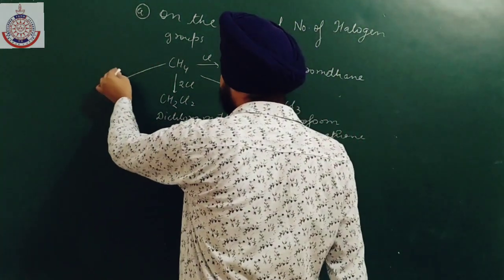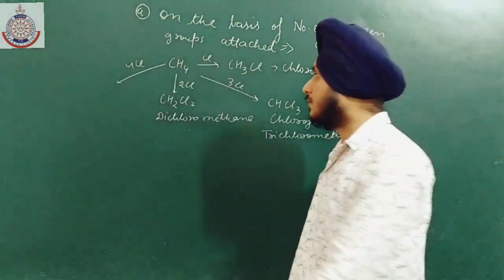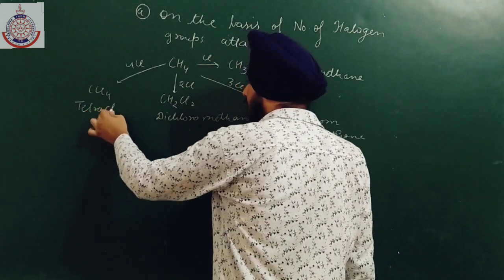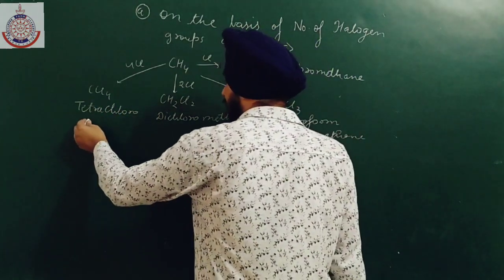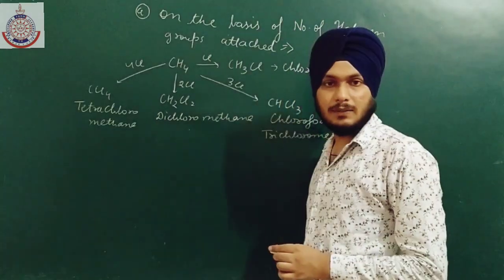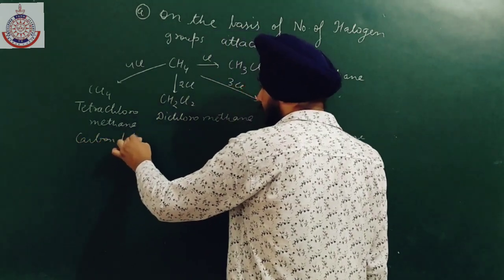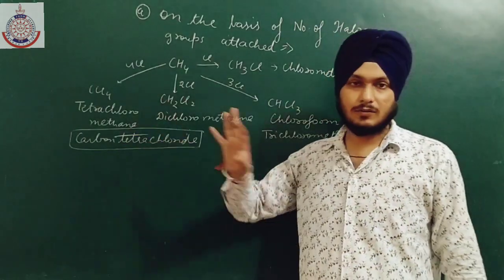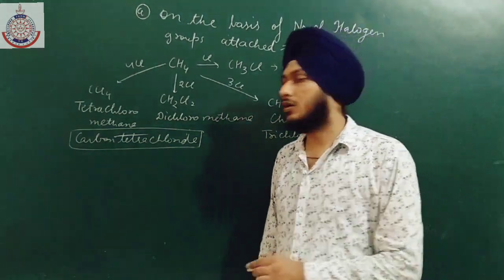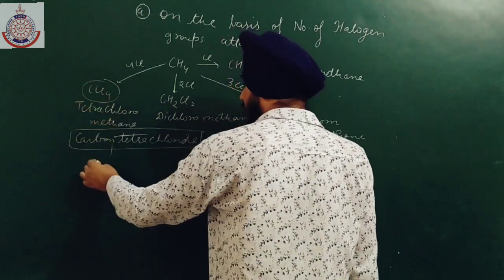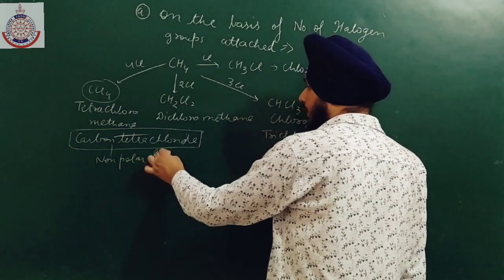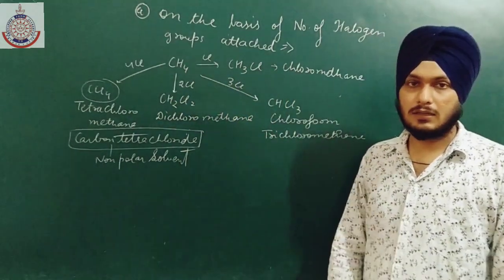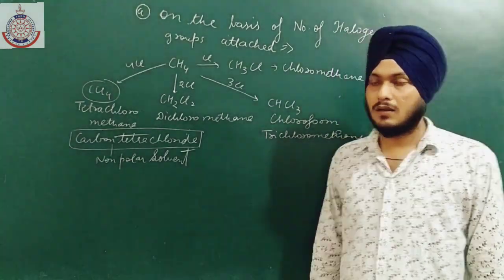If I replace all four hydrogens with chlorine, we get CCl4. The IUPAC name is tetrachloromethane and the common name is carbon tetrachloride. CCl4 is a very good non-polar solvent, so in reactions requiring a non-polar solvent, CCl4 is a very good option.